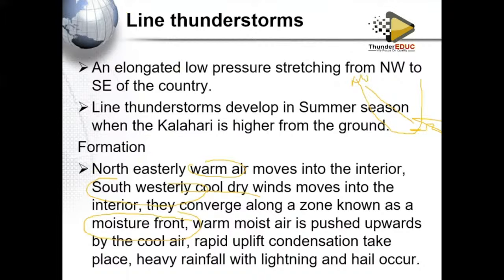As the warm air rises along the line it condenses, resulting in heavy rainfall, lightning, and hail. The weather conditions along the moisture front or line thunderstorm include heavy rain with lightning, likelihood of hail, and rapid cooling taking place along the line thunderstorm.